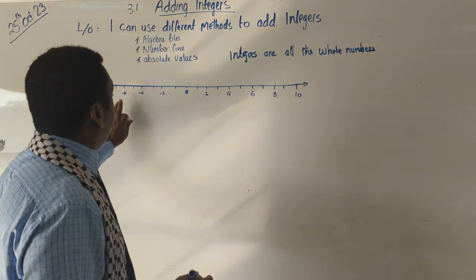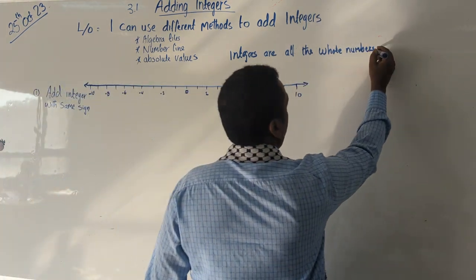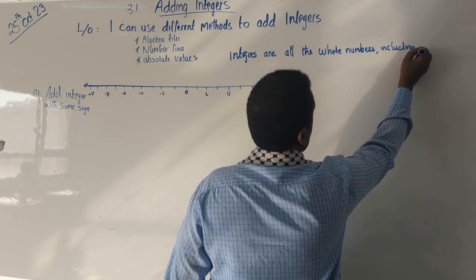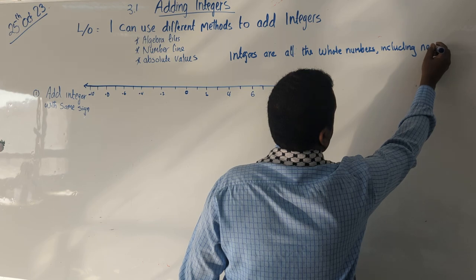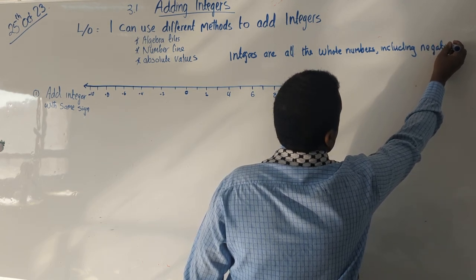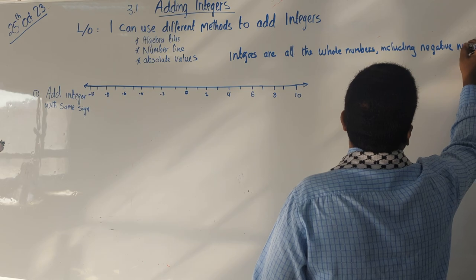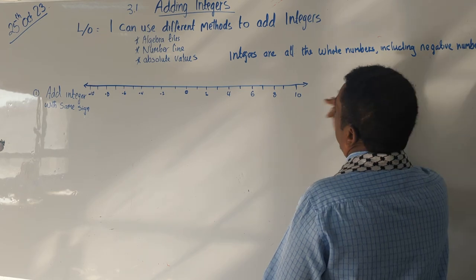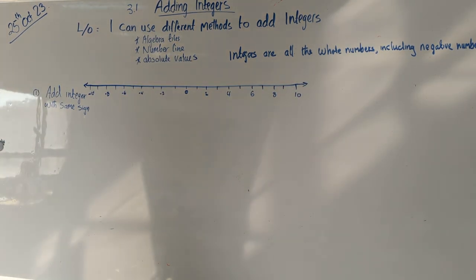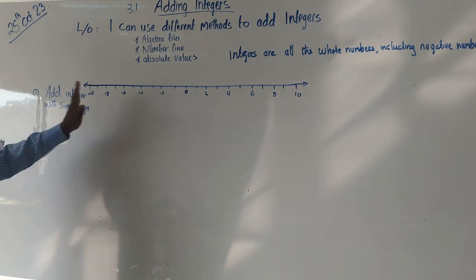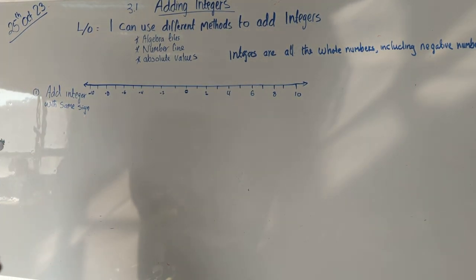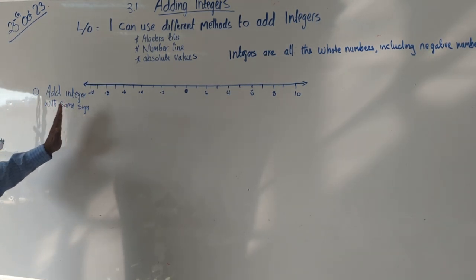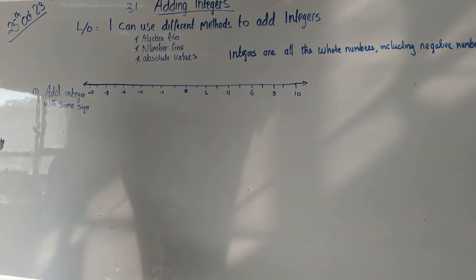Integers include negative numbers and zero, so zero is also an integer. Today we are learning how to add integers. The first target is: how do we add integers with the same sign?